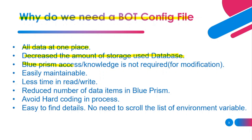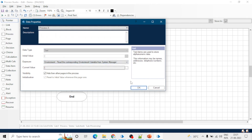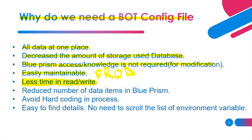In the case of bot config file you don't need any access to Blue Prism or any knowledge of it, and this file is easily maintainable. We can easily read or write data from this file. When we try to fetch a value of an environment variable, we have to create a data item and establish a connection with the database. Bot config file will reduce the number of data items in Blue Prism — no need to create data items because we will use the bot config file.